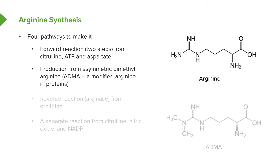The second way of making arginine is production from asymmetric dimethylarginine, or ADMA. This is a modified form of arginine found in proteins — it differs from arginine by having a methyl group that is added after the protein is made. To get ADMA, one must break down a protein by proteolysis and ADMA is released, after which it can be converted back into arginine. The third reaction involves a reversal of a urea cycle reaction using the enzyme arginase, involving the molecule ornithine.